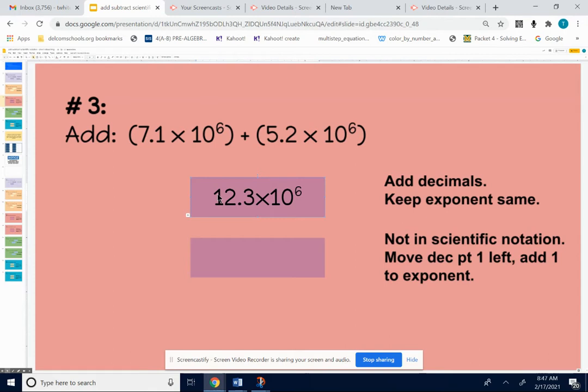But we have to be careful on this problem because the final answer, 12.3, is not between 1 and 10. 12.3 is not between 1 and 10, so this really isn't quite right. So what we need to do, move this decimal point on 12.3, 1 to the left, and that will be 1.23, and that's good.